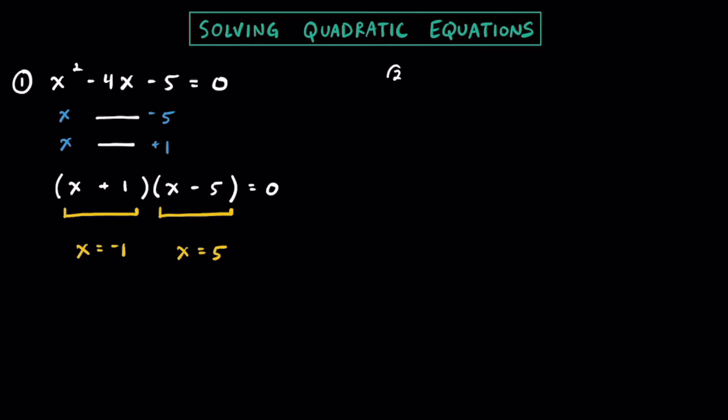Here's another example. Let's try solving this equation where we have x squared plus 8x plus 19 is equal to 0. Right away I'm looking at this and I don't think we can factor it, just because 19 is a prime number and no factors of 19 will add up to get 8. So I'm going to go right into using the quadratic formula here. That's a pretty common strategy.